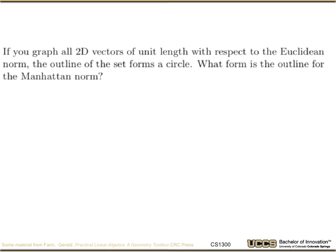Let's start with a norm question. If you graph all the 2D vectors of unit length with respect to the Euclidean norm, they form a circle. What's the form of the outline for the Manhattan norm, or the L1 norm?